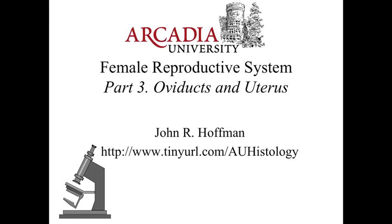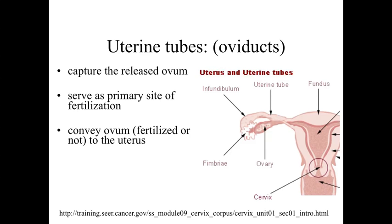Hello, and welcome to part three of our lecture series on the female reproductive system. In part three, we're going to take a look at what's occurring within the oviducts and most importantly, what's occurring within the uterine wall. The oviducts, uterine tubes, and fallopian tubes are structures that extend out from the uterus to essentially come very close to the ovary, because they're going to capture that released ovum and transport it, whether it becomes fertilized or not, from its release site at the ovaries into the uterus.